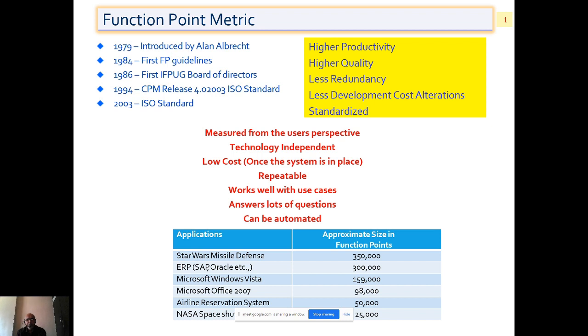So by doing FP estimation, what we are achieving is higher productivity, higher quality, less redundancy, standardization, and not getting affected by cost iterations. The characteristics of FP metrics are they are measured from the user's perspective, they are technology independent, low cost, repeatable, and work well with use cases. So there is a use case FP estimation where use case points are taken.